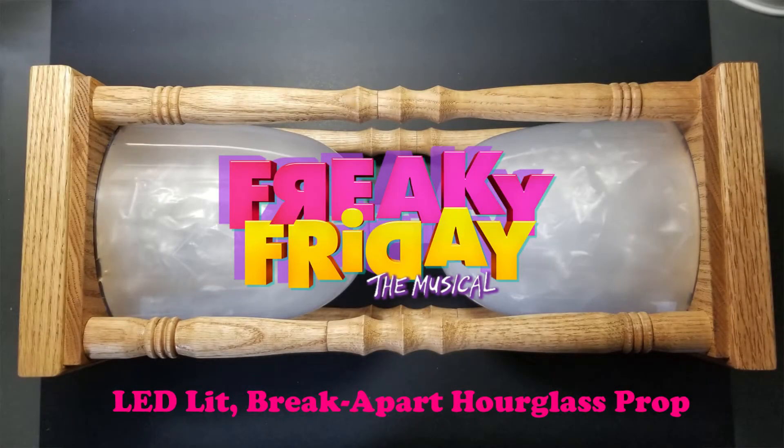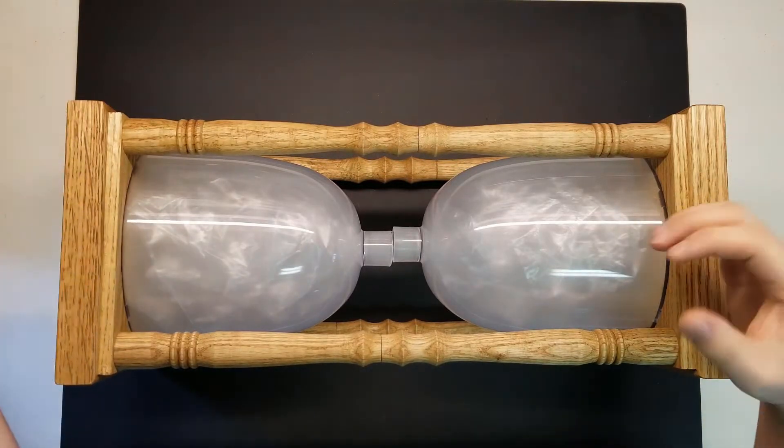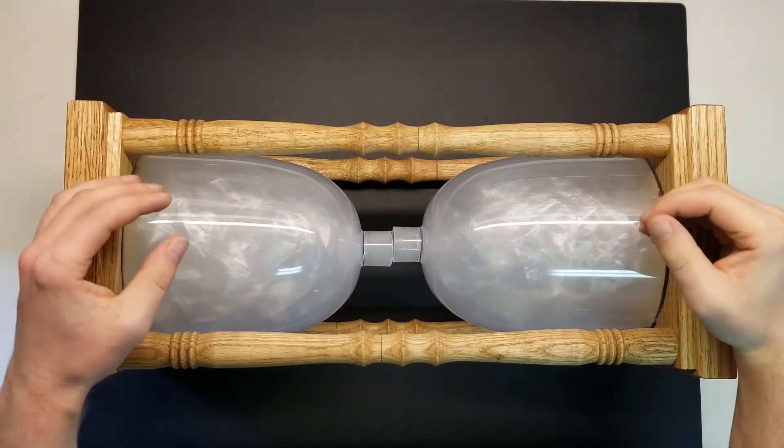Hello everyone and welcome to the video walkthrough of this hourglass prop I've made for the musical Freaky Friday. In the musical, there's a mother and daughter that are fighting over this antique hourglass and it breaks in half in their hands.